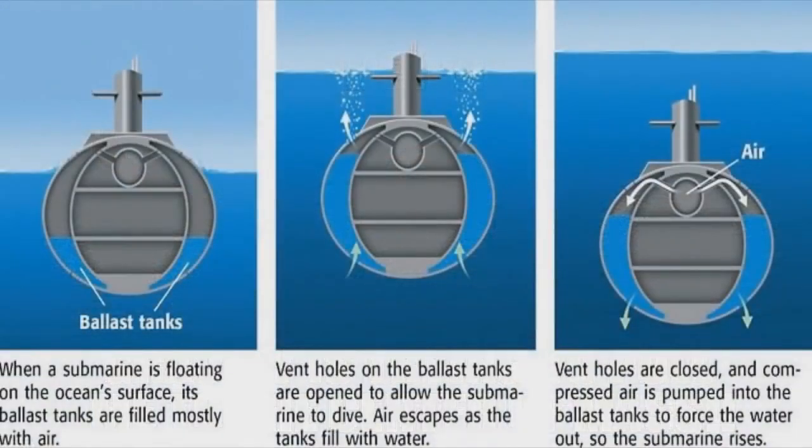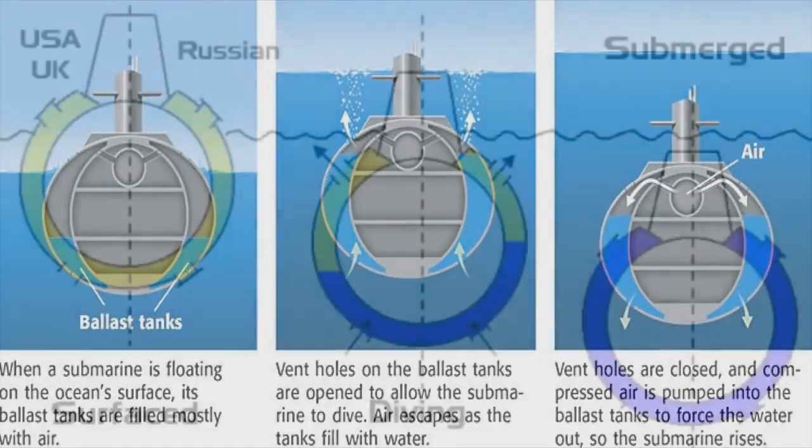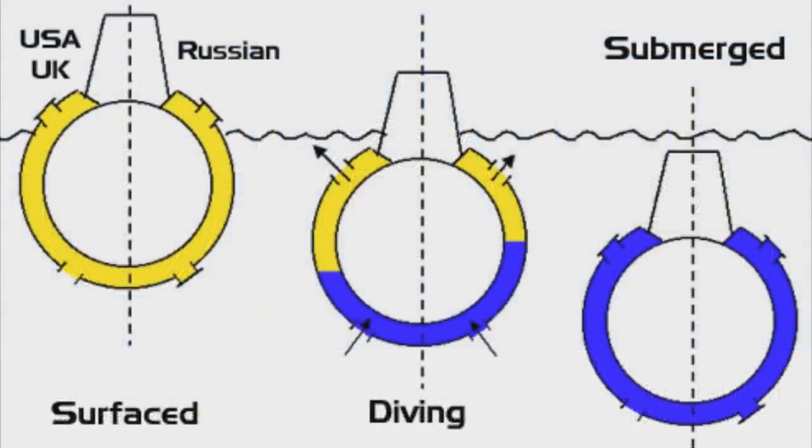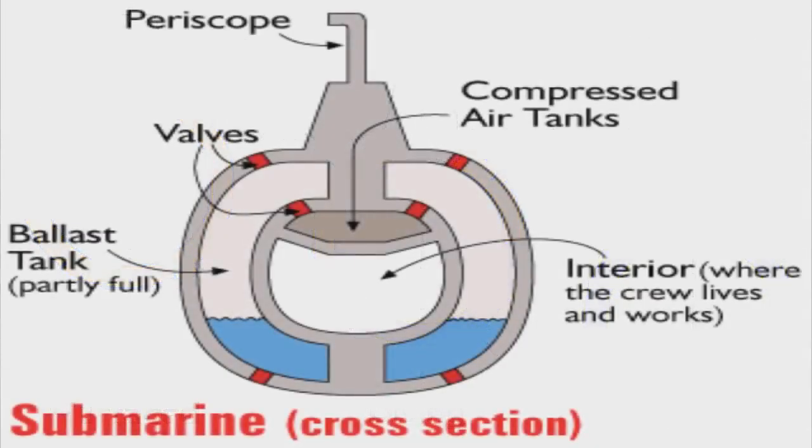Submarines float on the surface when their ballast tanks are filled with air, but when the vents are opened and seawater floods in, they begin to sink as the submarine's density becomes greater than water. Depending what depth they wish to dive, sailors simply adjust the ratio of air and water in their tanks, and when ready to resurface, they blow compressed air into the tanks, forcing the seawater out, lowering the density, and thus causing them to rise back to the surface.